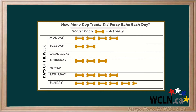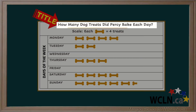A graph has several labels. These labels are important as they give important information about what is being shown. The title gives a short explanation of what information is focused on in the pictograph. It can be creative or simple, as long as it tells you what the graph is about. The title of this graph tells you that it is about the number of dog treats baked by Percy.